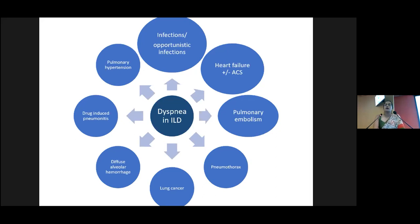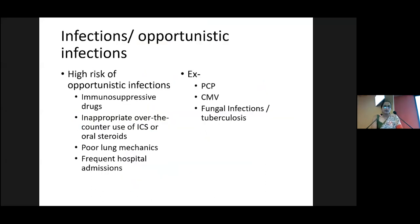It gets trickier because most of these conditions can co-exist in the same patient. Infections and opportunistic infections must be excluded first, as these patients are at high risk. Most patients with connective tissue disorders on immunosuppressants are at high risk of opportunistic infections. Many are on over-the-counter inhaled corticosteroids and oral steroids, and they inherently have poor lung mechanics and frequent hospital admissions making them prone to infections. The main ones to consider are PCP, CMV, fungal, and tuberculous infections.